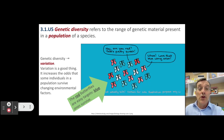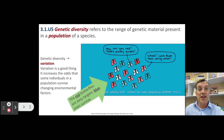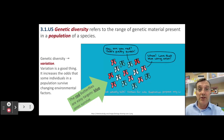Should the environment change, the reverse can be true. In that case, the blue butterflies are the ones that are well camouflaged and hidden, while the red butterflies are most likely to be eaten. That means the blue butterflies are more likely to pass on their genes and survive.